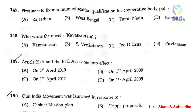The next question: first state to fix minimum education qualification for cooperative body poll. The answer is option A — Rajasthan. The next question: who wrote the novel Kaval Kotham? The answer is option B — Venkadeshin is the correct answer.